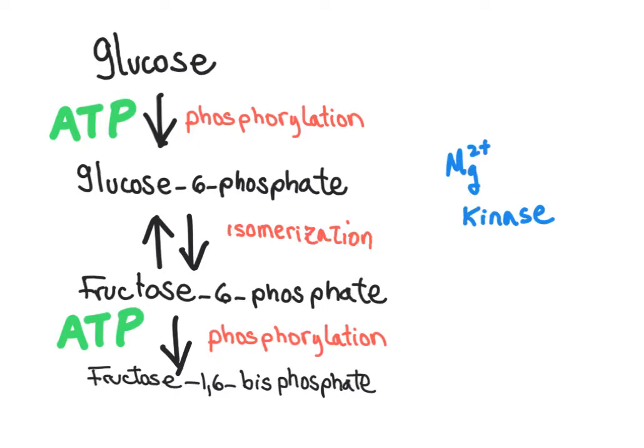The pentose phosphate pathway will generate ribose-5-phosphate, which is the precursor necessary for the sugar in RNA and DNA. On the second step, glucose-6-phosphate will be isomerized to fructose-6-phosphate through a tautomerization that goes through an enediol intermediate. After that, we will have a second phosphorylation, which is the investment of a second molecule of ATP.